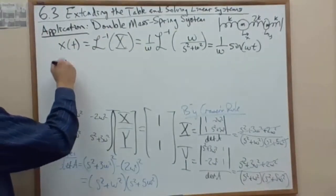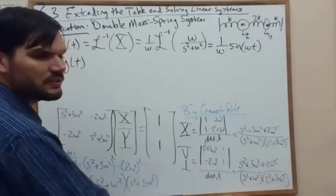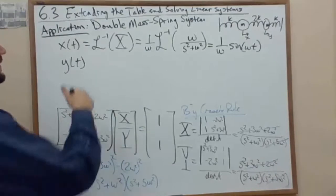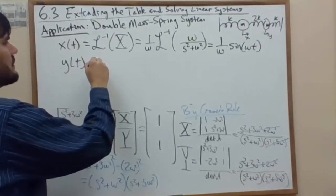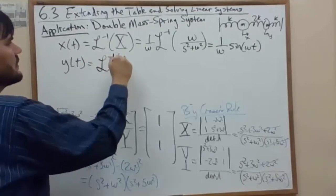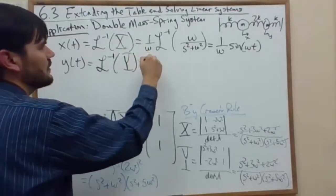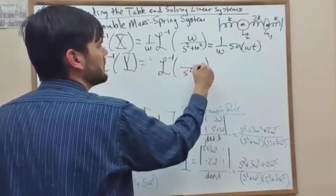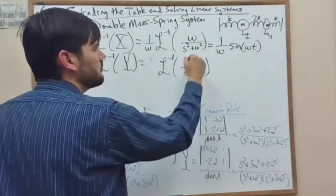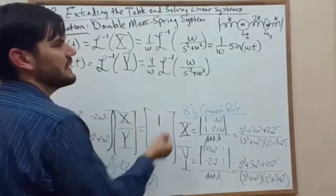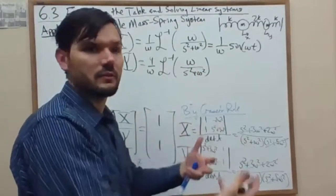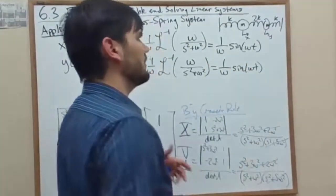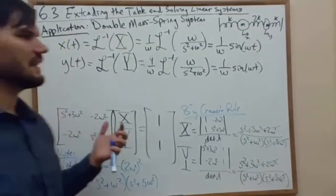And then let's solve for y. Well, actually, we know that y is the same. It has the same transformed version. It's going to be the same on the time signal side. So again, we have the inverse of 1 over s squared plus omega squared. So we multiplied by omega on the inside, divided by omega on the outside to get our nice balanced form of the transform of sine of omega t. And that gives us 1 over omega sine of omega t. The same thing for both x and y.